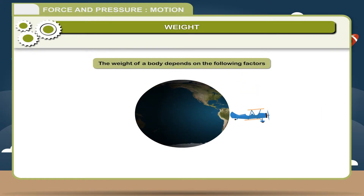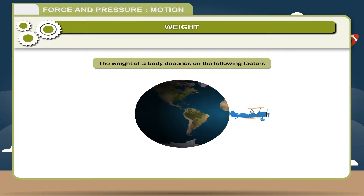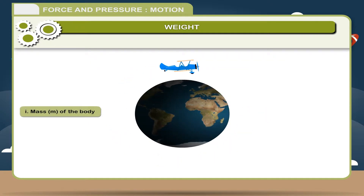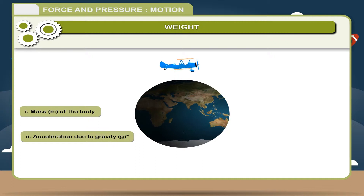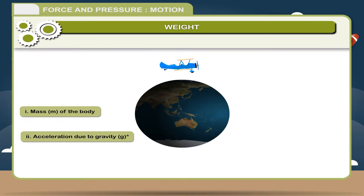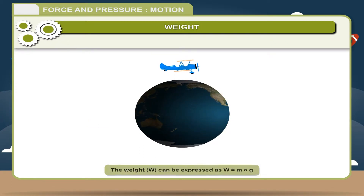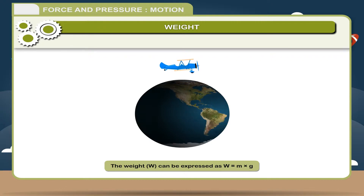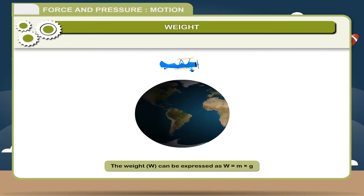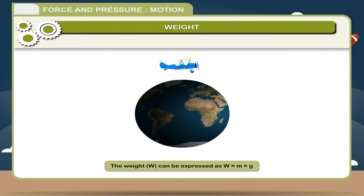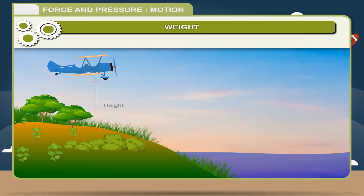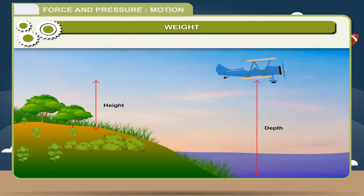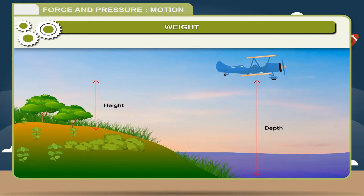The weight of a body depends on the following factors: 1. Mass M of the body, and 2. Acceleration due to gravity G. The weight W can be expressed as W = M × G. As the value of acceleration due to gravity varies from place to place, the weight of a body also differs.